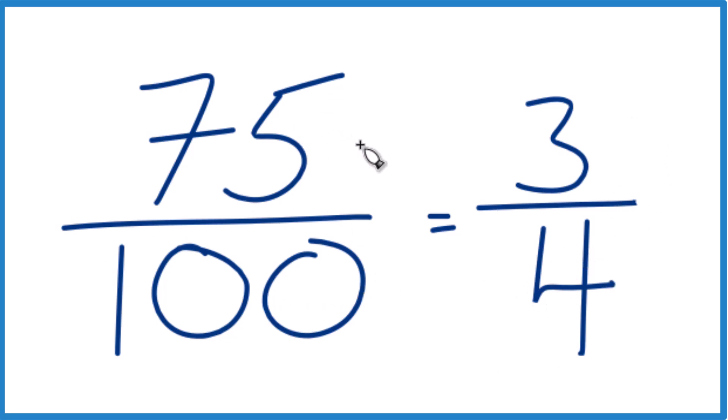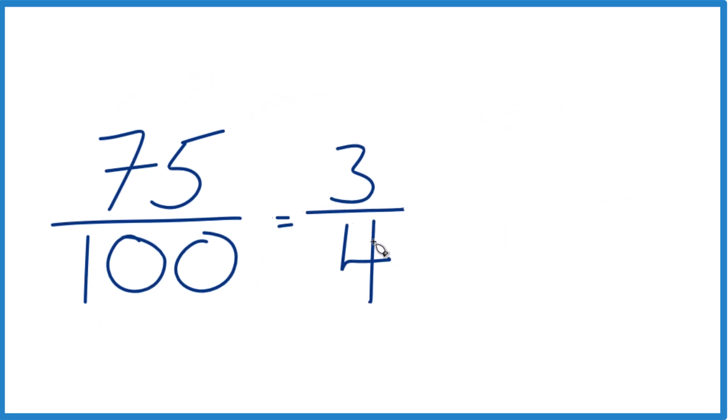So 75% as a fraction, it's 75 over 100, simplifies to 3 fourths.